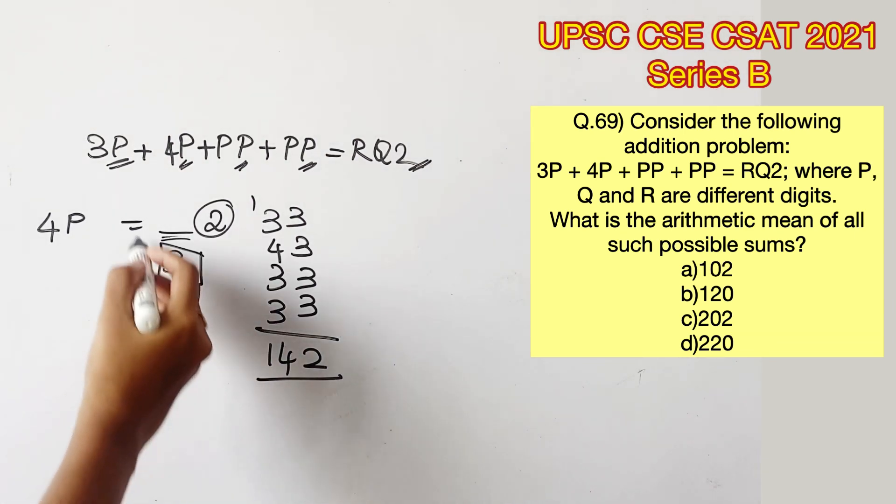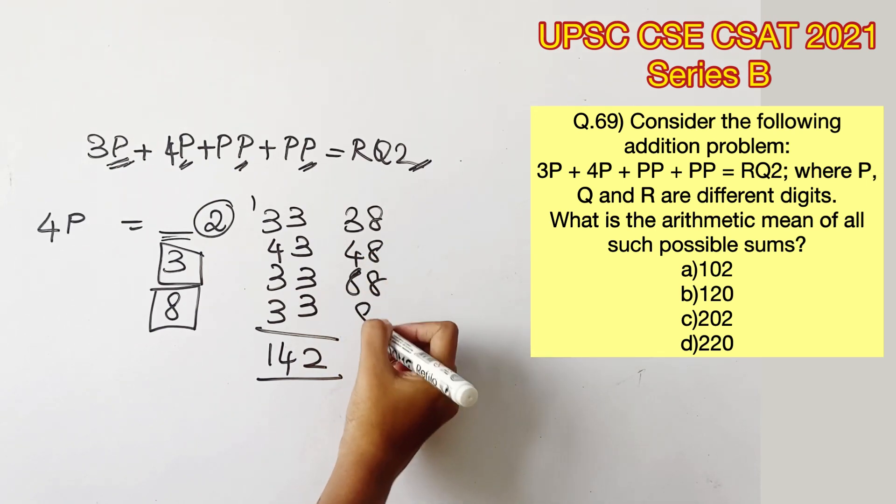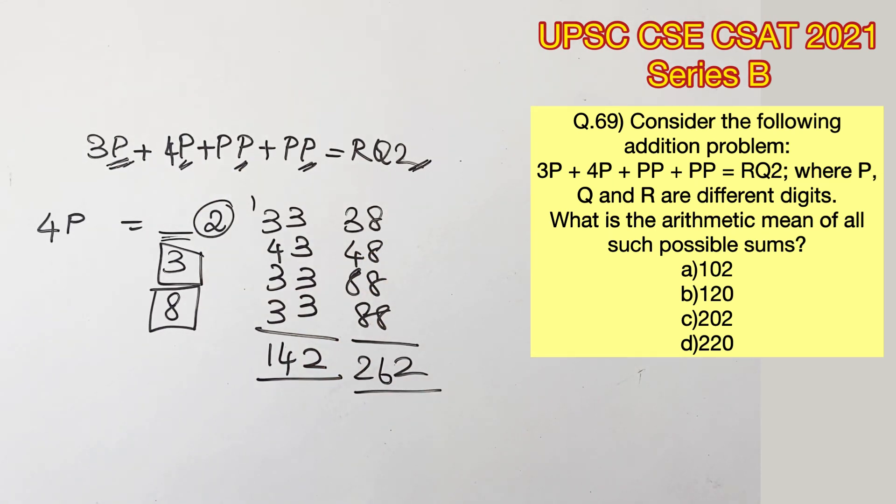Now let's consider the value of P as 8. Substituting in the terms, we get 38, 48, 88 and 88. Adding these up, we get 262.